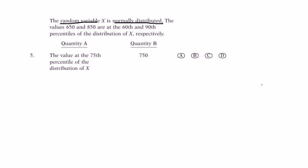the random variable x is normally distributed. What could that mean? It could mean that x measures test scores and a bunch of people get 650 and a bunch of people get 850, for example.